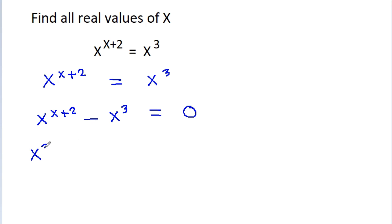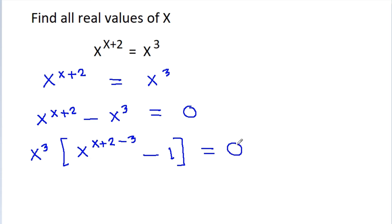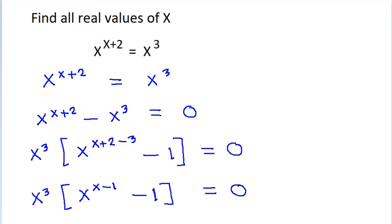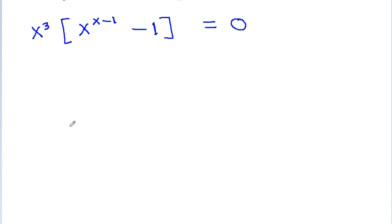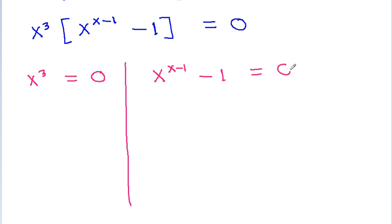If we take x cubed common, then we will get x cubed times x power (x plus 2 minus 3) minus 1 is equal to 0, which is x cubed times x power (x minus 1) minus 1 is equal to 0. So either x cubed is equal to 0, giving x is equal to 0, or x power (x minus 1) minus 1 is equal to 0, giving x power (x minus 1) is equal to 1.